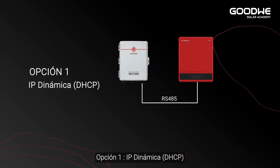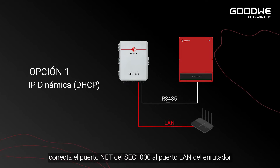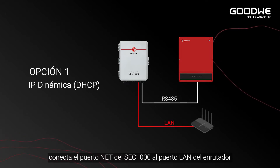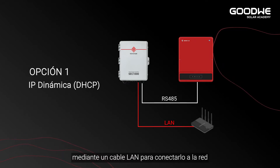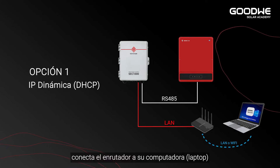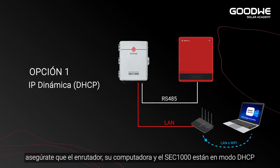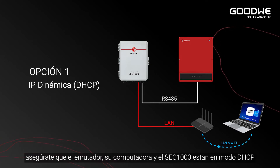Option 1: Dynamic IP. Connect the SEC 1000 network port to the router LAN port with a network cable to connect to the network. Connect the router to PC. Make sure the router, PC, and inverter are all in DHCP mode.